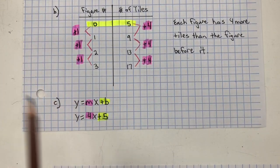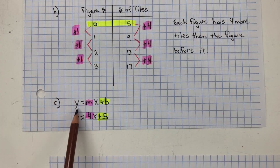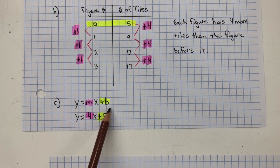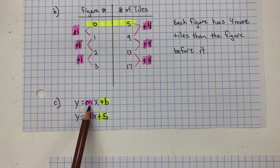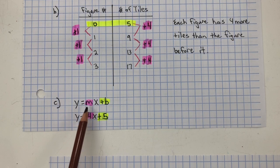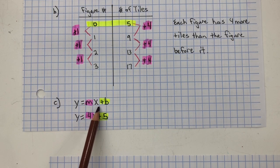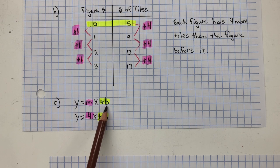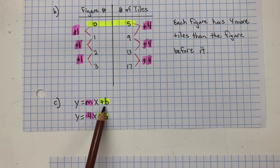In part C, you're going to write the equation, and you've learned the form of Y equals MX plus B. M is the rate of change, how much is it growing by for each figure number, and B is your initial value. What did you start with? That's also known as the Y-intercept.